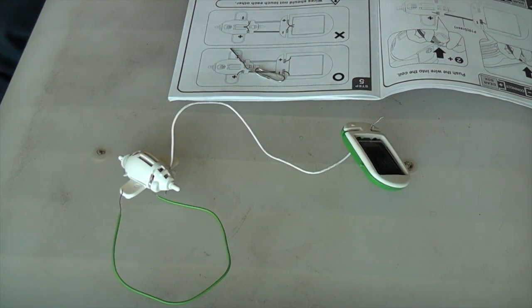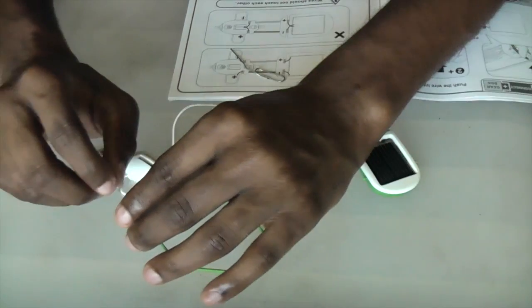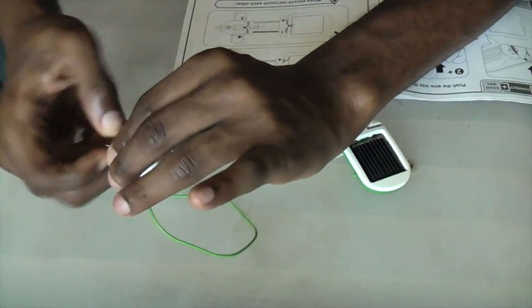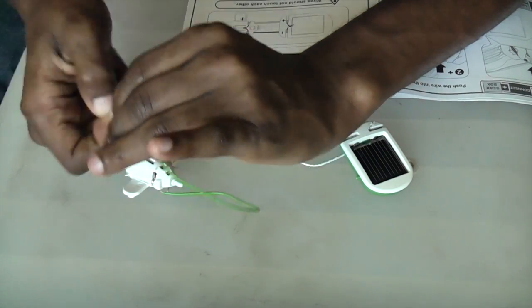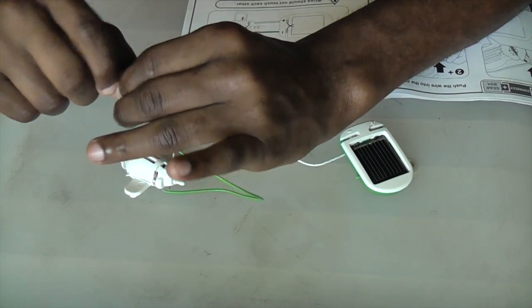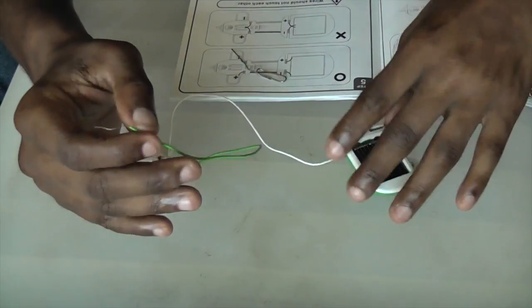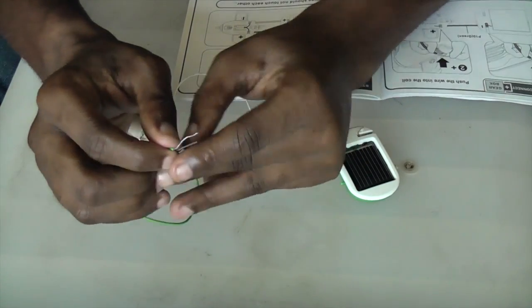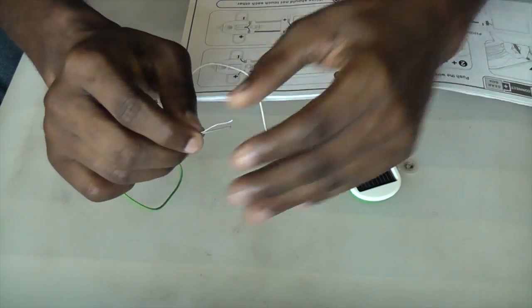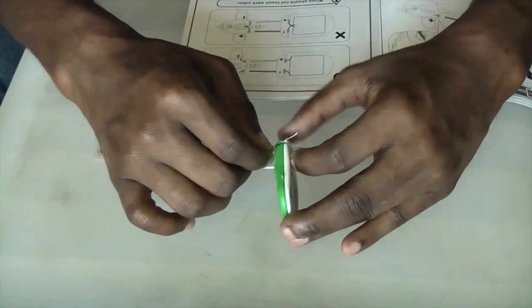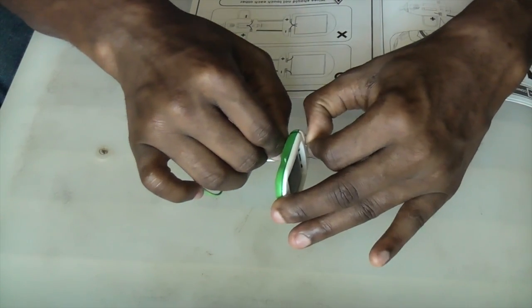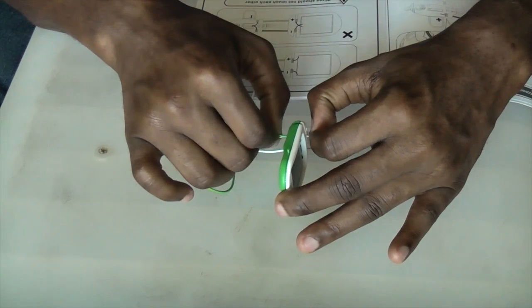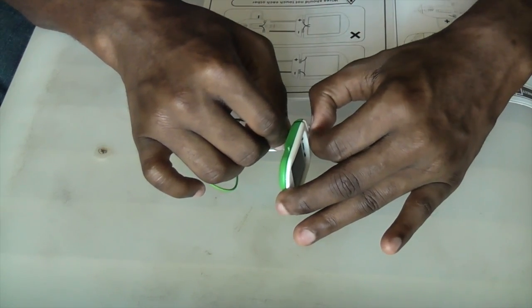And now I'll do the same thing again, attaching the green wire this time to the negative side of the solar panel module. And again, paper clip down into the coils, when you think it's secure enough.